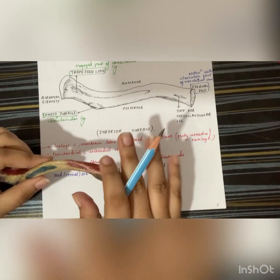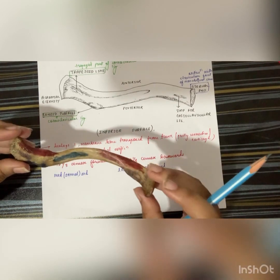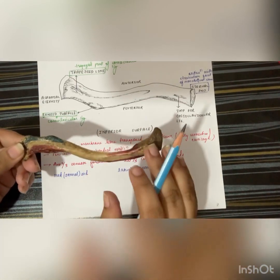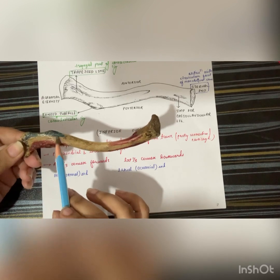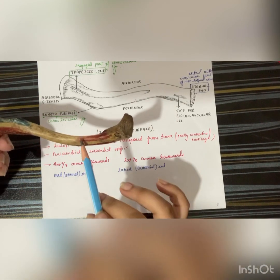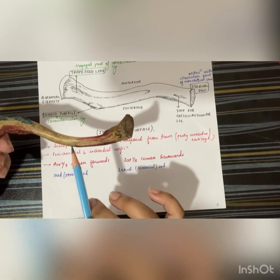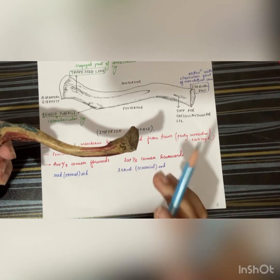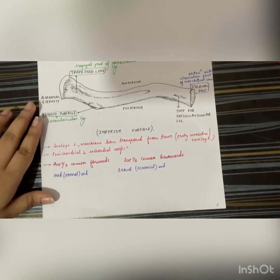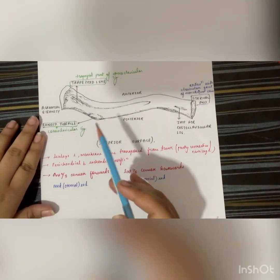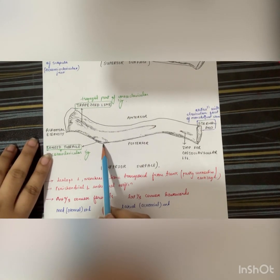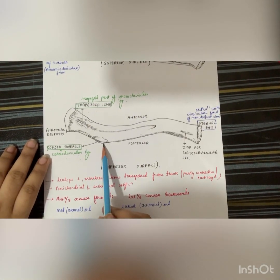This is the lower surface of the right clavicle, and then coming to the upper surface of the right clavicle: this is the trapezius, this one is the deltoid, this one is the sternomastoid, and again this one is the pectoralis major. Then coming to the ligaments attached — on the conoid tubercle there is attachment for the costoclavicular ligament.